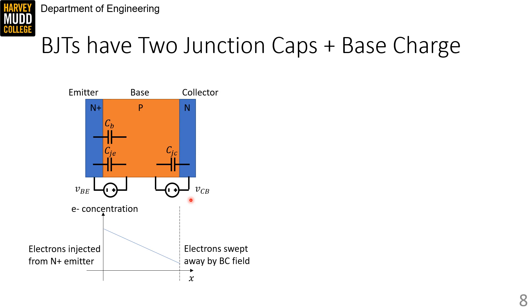Charge hides in one other place in a BJT which results in additional base-to-emitter capacitance we call CB for base transit capacitance.